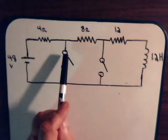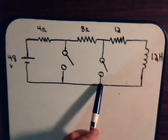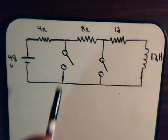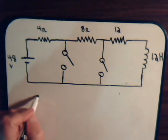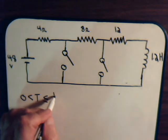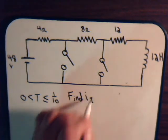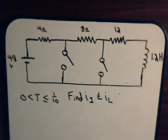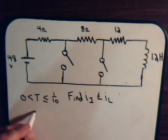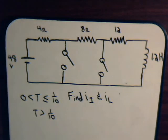Now at time t equals 0, we're going to close this switch. And then at a later time, say 1 tenth of a second later, we're going to close this switch. The question will be: what is the current that flows through this conductor? We'll find I1 for t greater than 0 and less than or equal to 1 tenth — that's the decay current. And then when t is greater than 1 tenth of a second, when both switches are closed, we want to find I1 and the decay current.